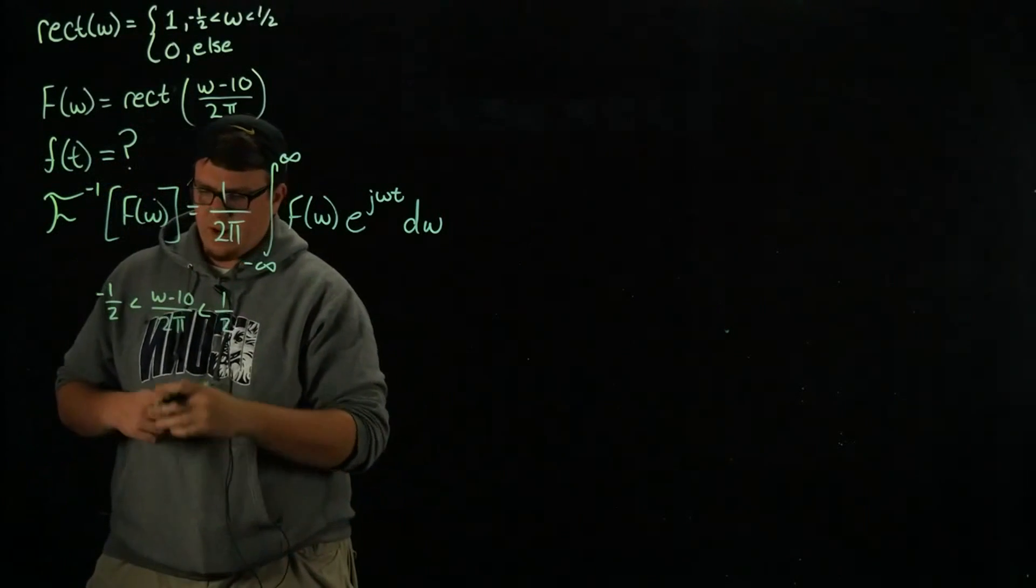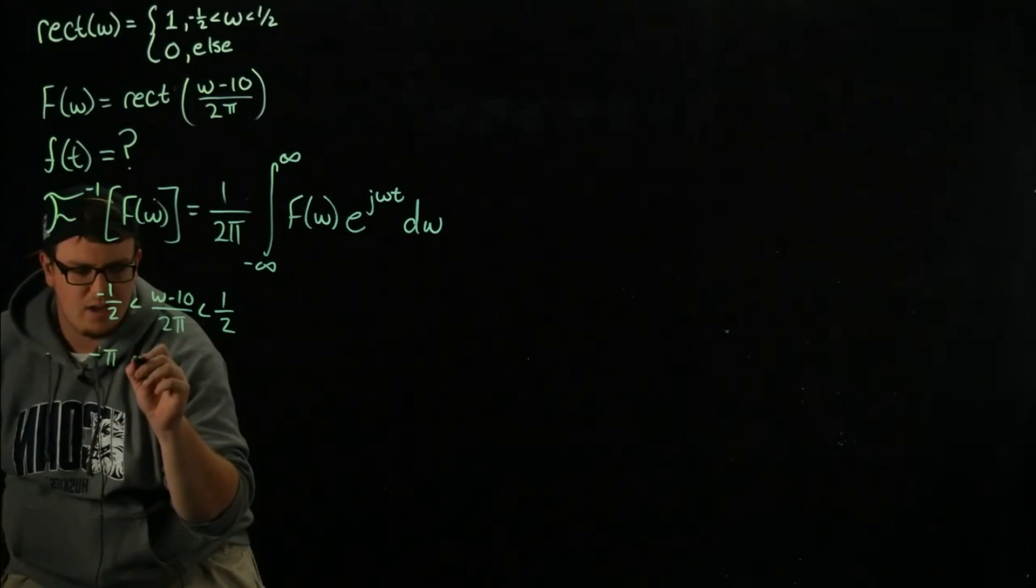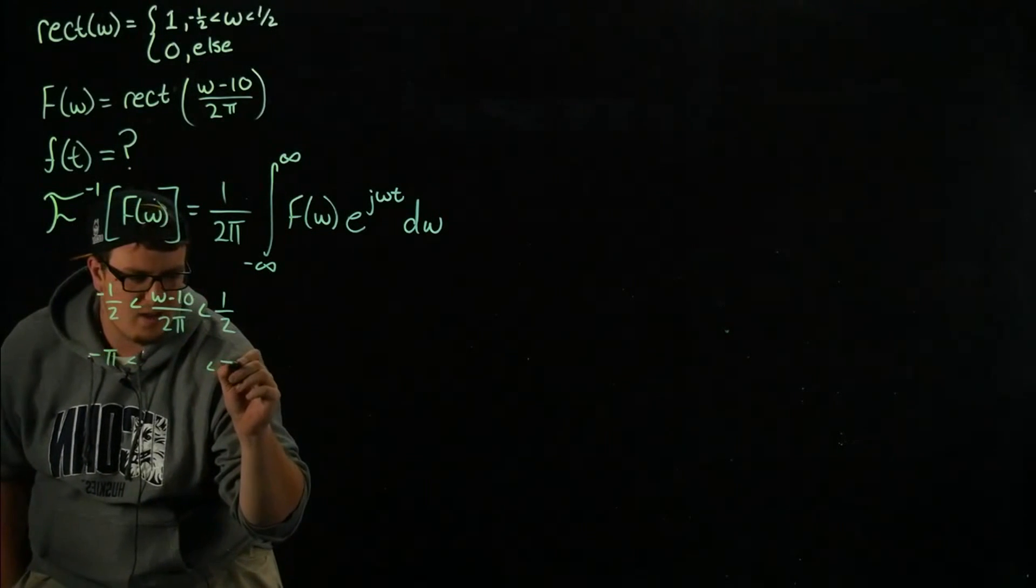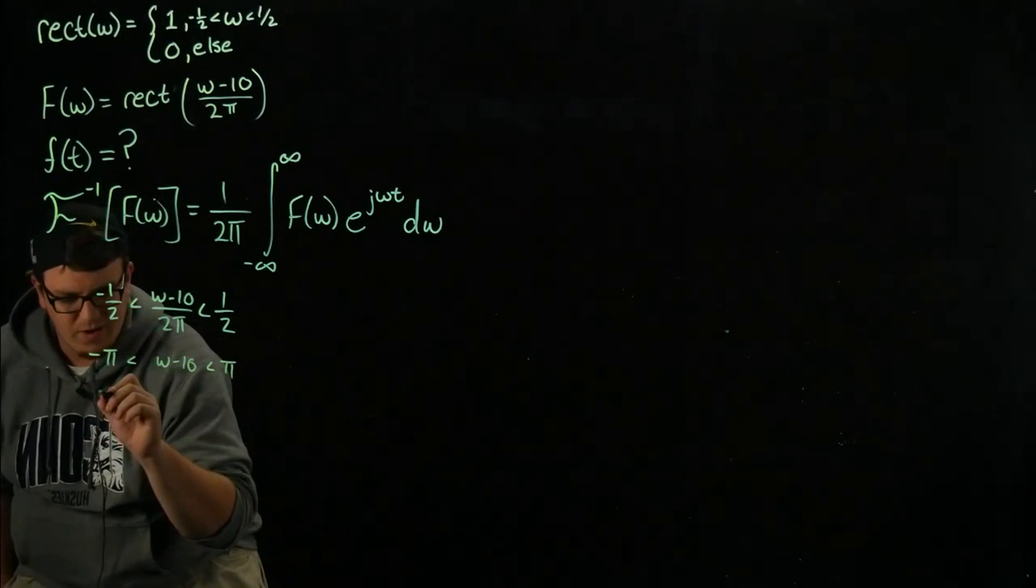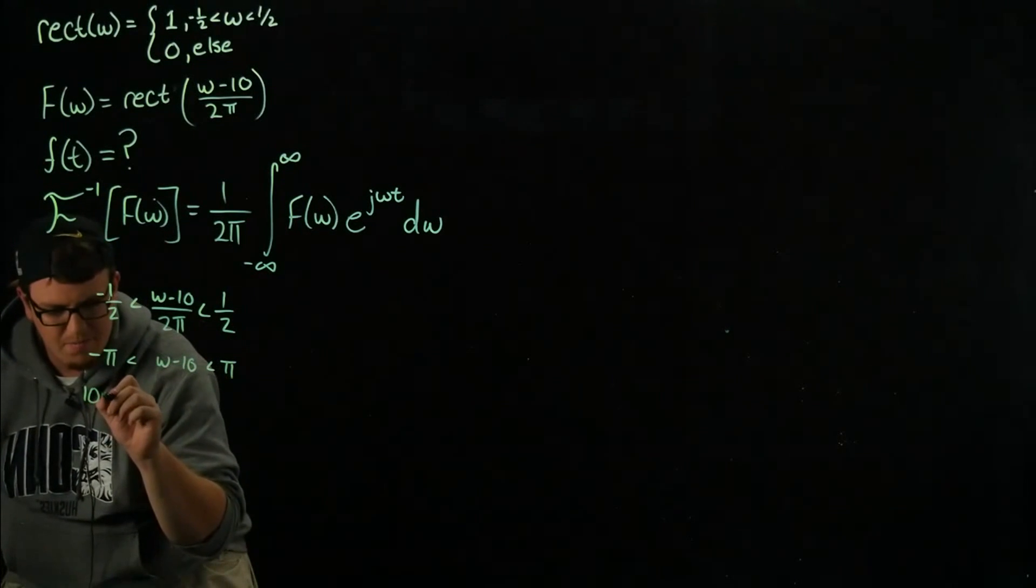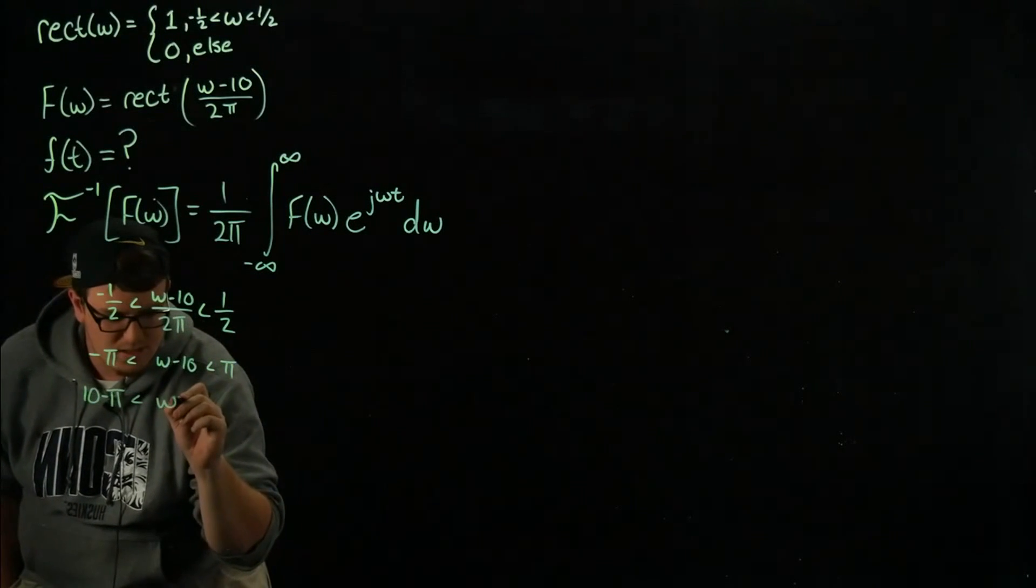If we do some manipulation here we end up with between negative pi and pi we have omega minus 10, which eventually gives us that between 10 minus pi and 10 plus pi.